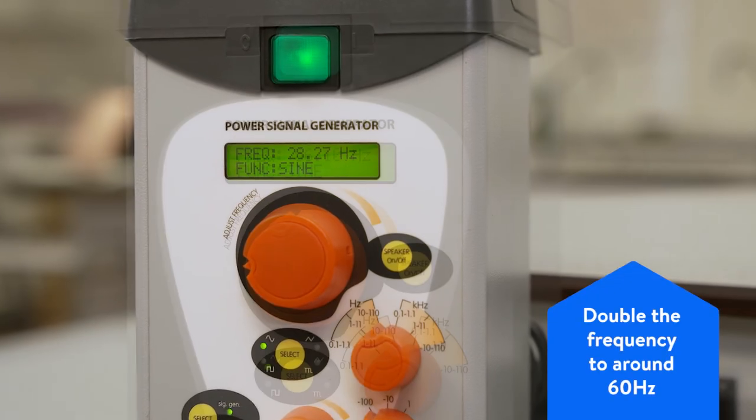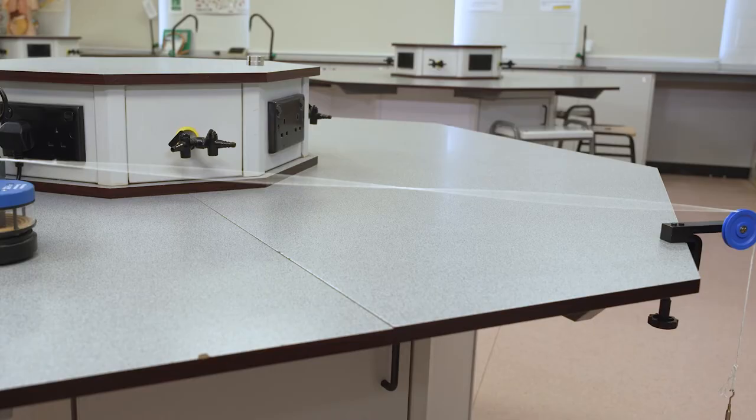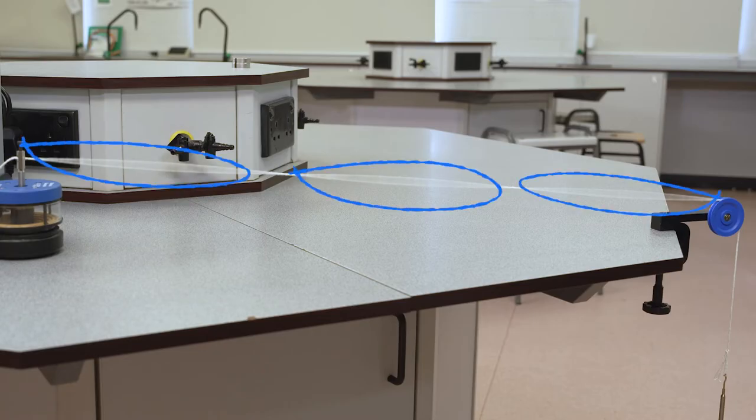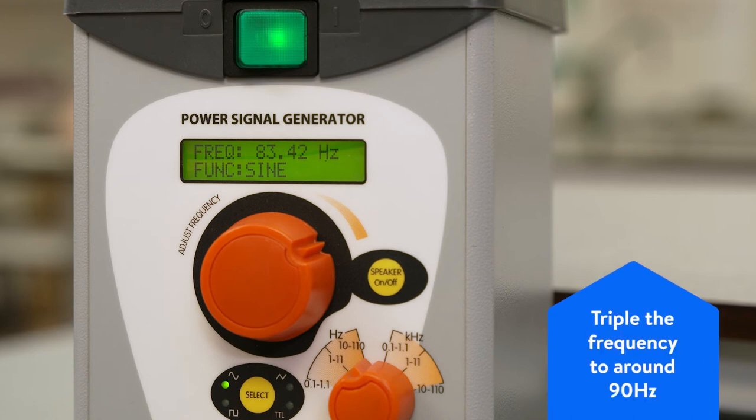Now double the frequency to see two standing waves. Then adjust the frequency again until you can see three clear standing waves. This should be around three times the frequency of the single wave.